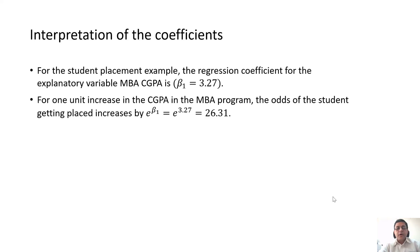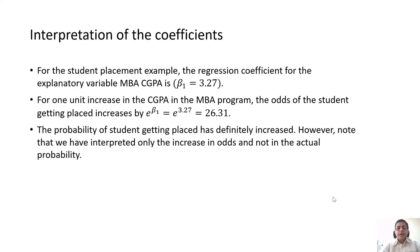Remember, this is the prediction on the odds of the probability, odds of success, not the probabilities themselves. The probability that the student will get placed also would have increased because the CGPA in MBA program has increased. We saw the plot in the last session. If the CGPA in the MBA program increases, the probability that the student will get placed also increases. But remember that we are not estimating or we are not interpreting in terms of probability. We are interpreting in the context of odds. We are saying 1 unit increase in CGPA increases the odds of student getting placed by 26.31. That is how you interpret the regression coefficients in a logistic regression setup.